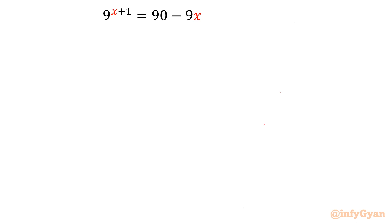If you are thinking you will take natural log both sides, that won't work because ln of 90 minus 9x cannot expand further. So what we can do here, we can first write the property of exponent that is a power x plus y equal to a power x times a power y.